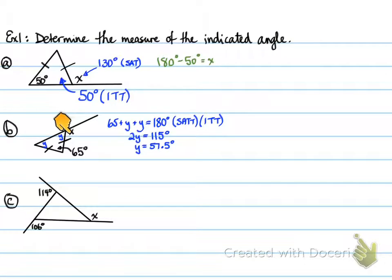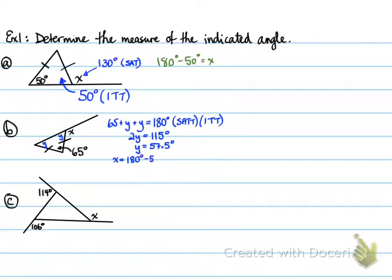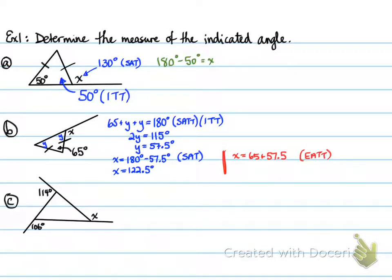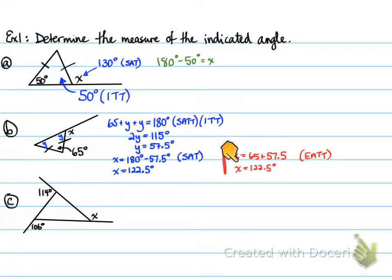Now we can find x. Using SAT: x equals 180 minus 57.5 equals 122.5 degrees. Alternatively, using EATT: x equals 65 plus 57.5 equals 122.5 degrees. Either approach is acceptable — you only need to show one method as your final solution for part B.